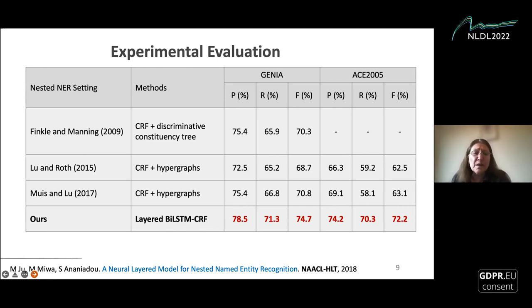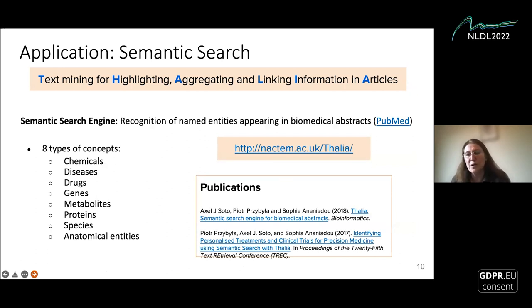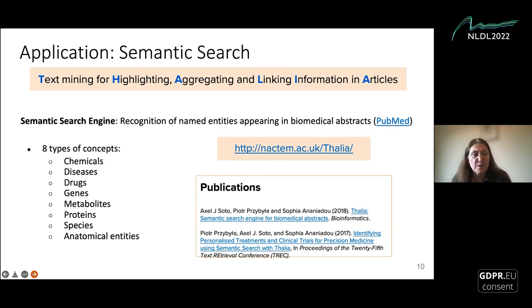One important application developed using only named entities was semantic search over PubMed abstracts. The system called Thalia is still available on the NACTEM website. The idea is to do semantic search based on named entities. Because we're working on biomedicine, we identify eight types of concepts, and more entities can be added as needed.